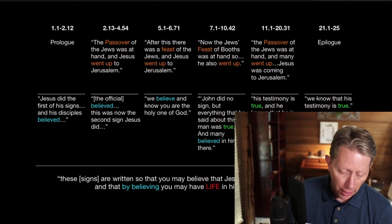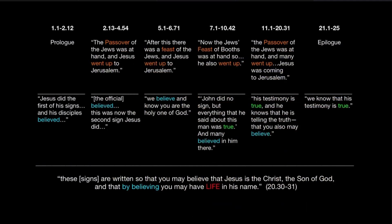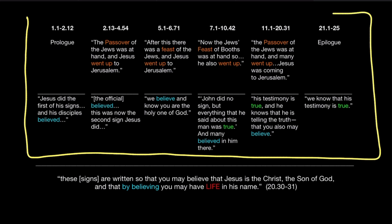We've been looking in these videos at what I consider the biggest blind spot for people in reading the Gospels or a biblical book in general. We've been looking at the Gospel of John and the structure or architecture of the book, and we start again with the structure of the book — six major chapters from the original author.